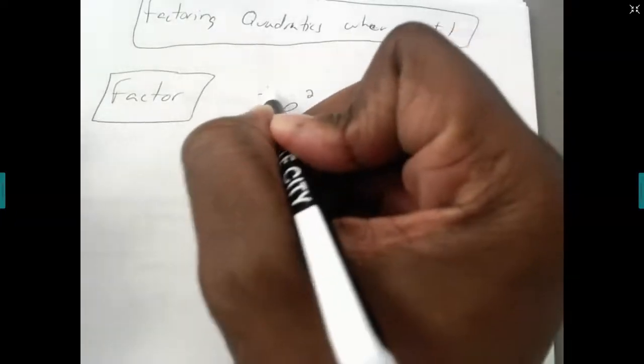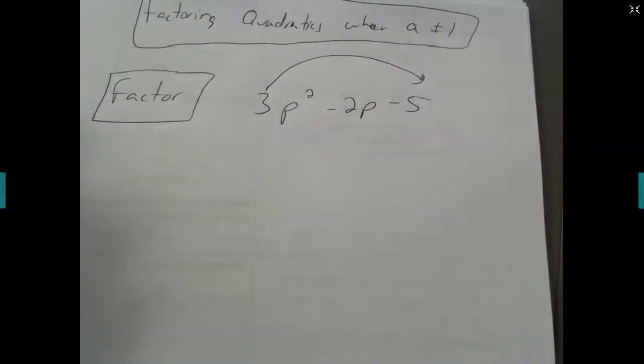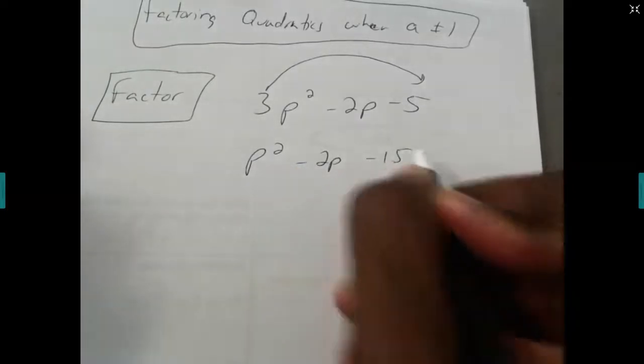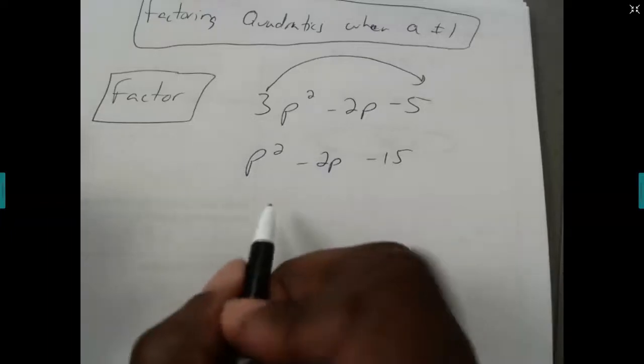So where we begin is, we take the number in front of x squared and multiply it to the constant at the back. We get p squared minus 2p minus 15. Now it looks more like polynomials we have that factoring.